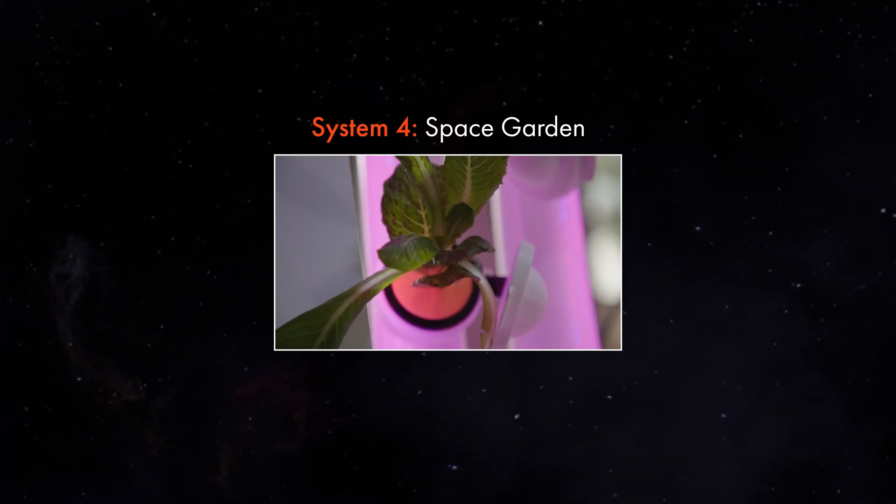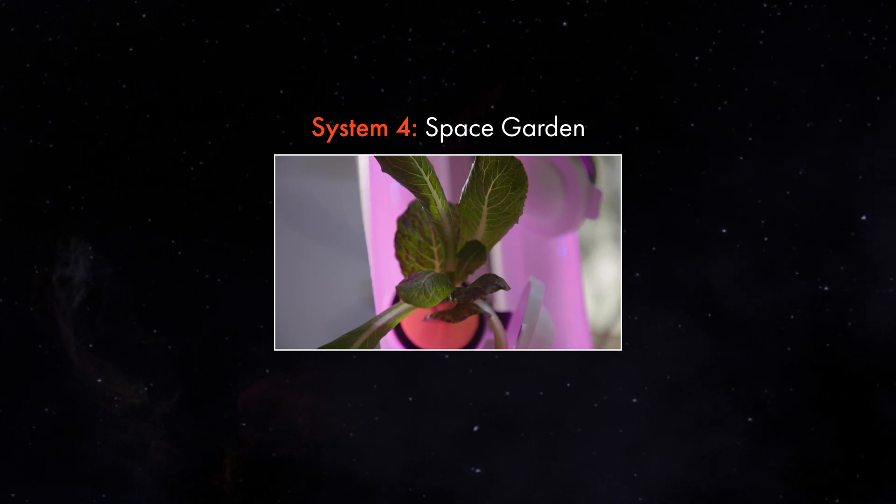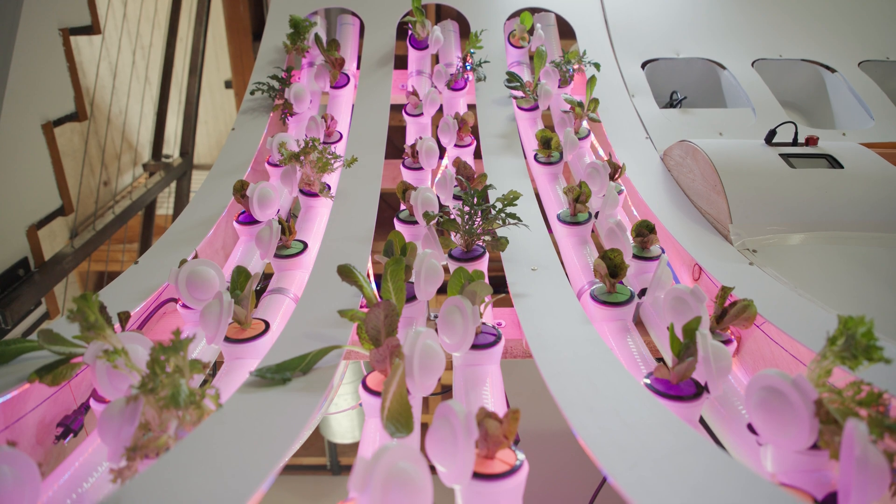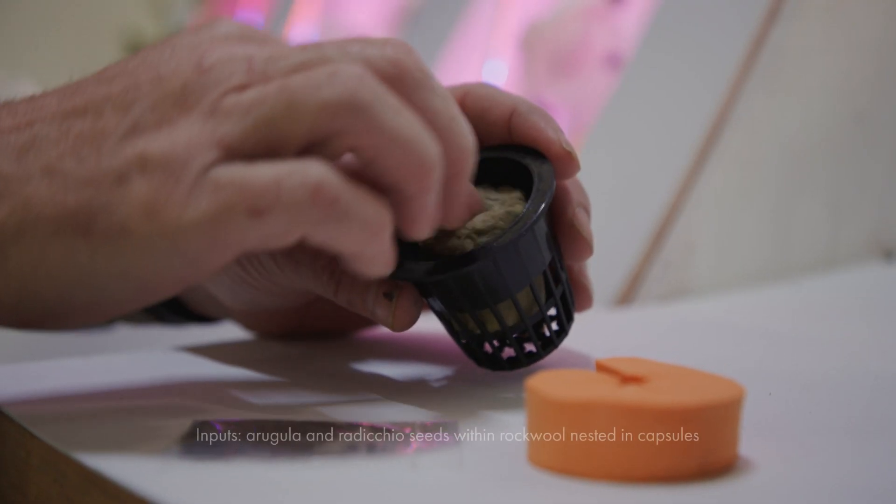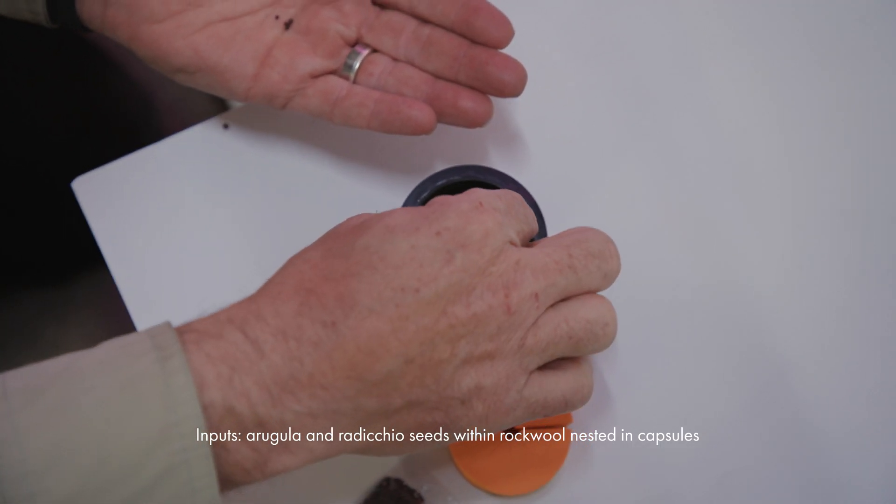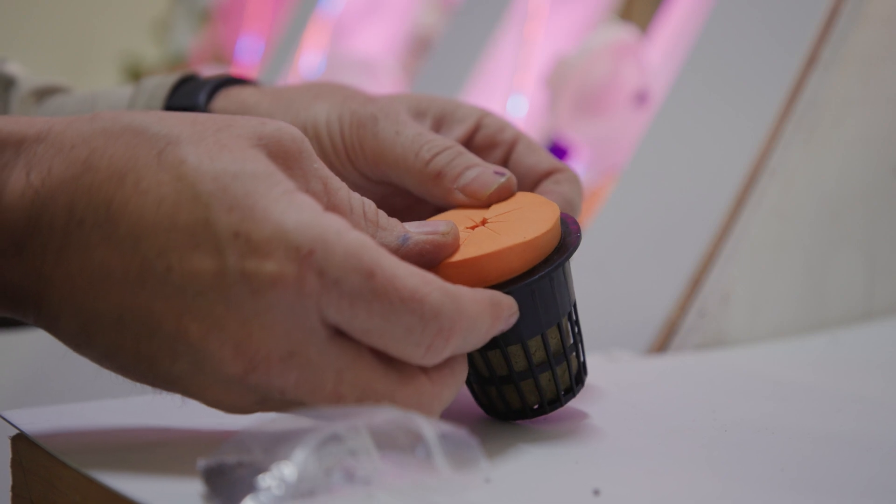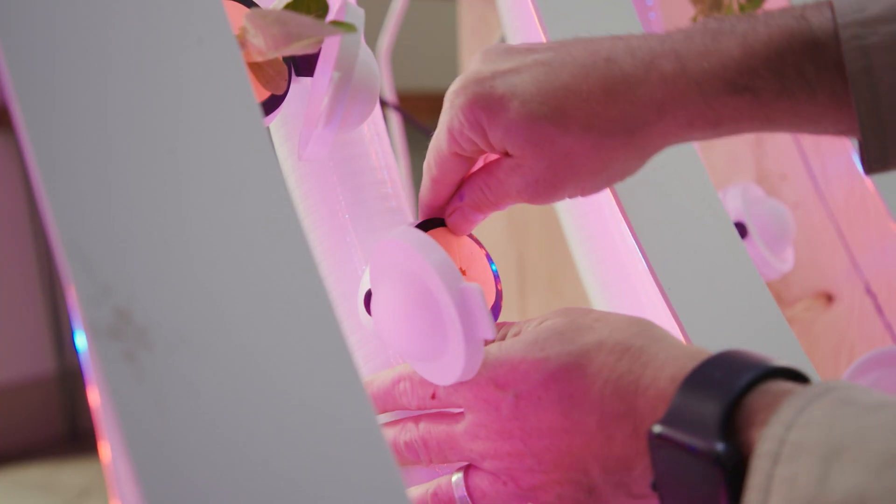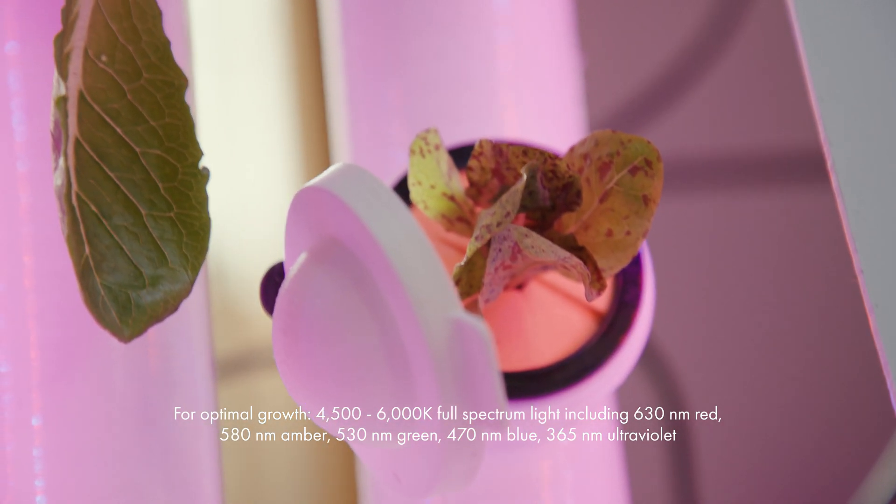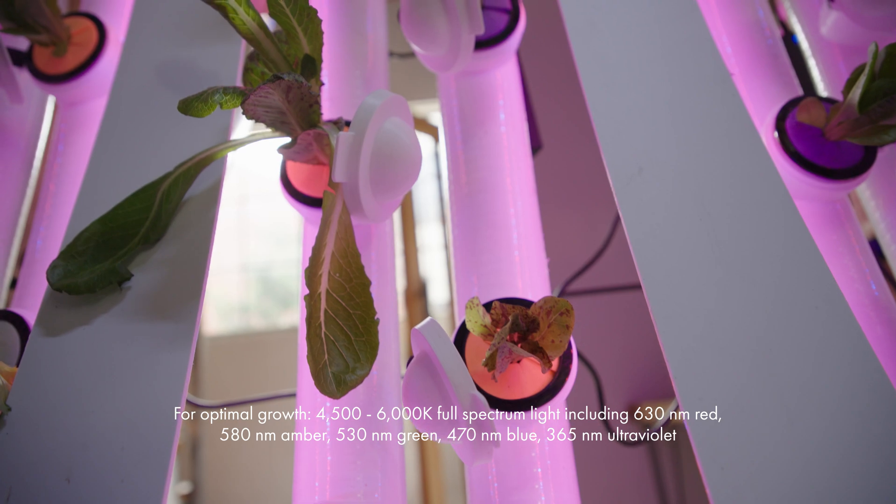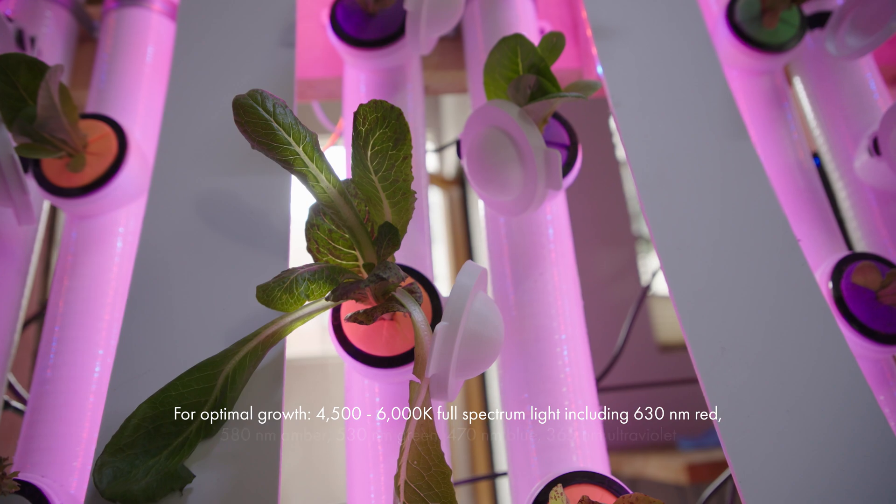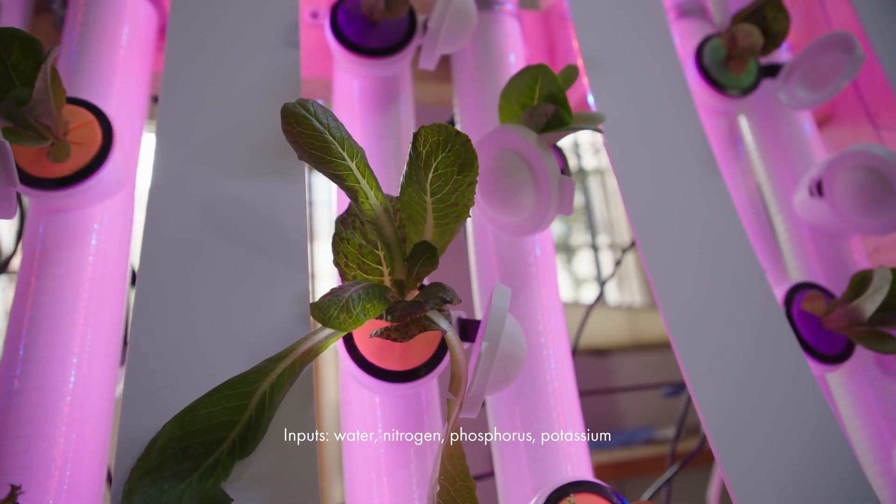System 4, Space Garden. Tending to the aeroponic garden supports mental health and offers access to fresh, locally grown food. It's also beautiful to look at. Here, we're planting arugula and radicchio seeds in rock wool nested in capsules. Each capsule is then secured with a foam insert and placed in the garden. To optimize growth, 4500 to 6000 Kelvin full-spectrum light shines on the plant. This is generated by an assemble of LEDs at targeted width lengths. The tubes that carry the capsules deliver water and nutrients as needed.